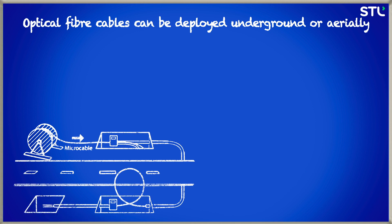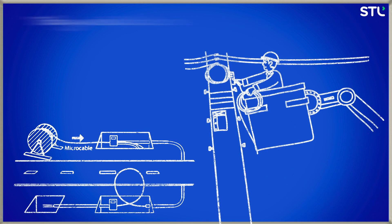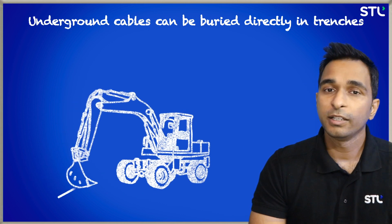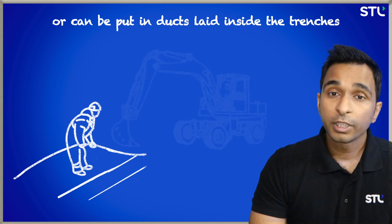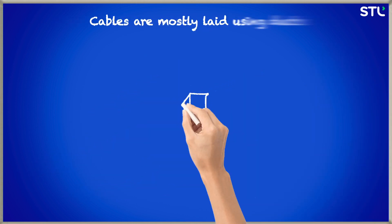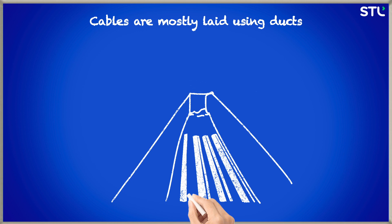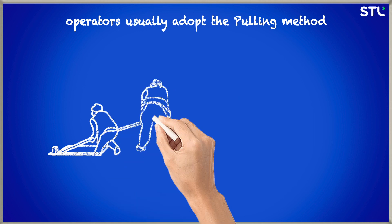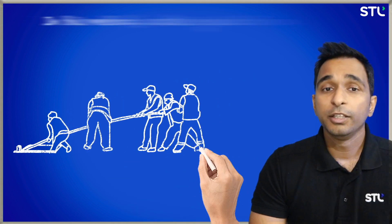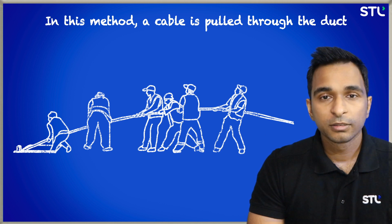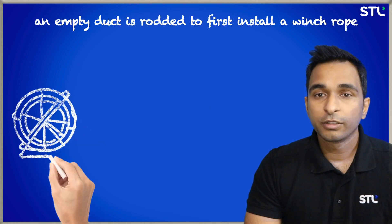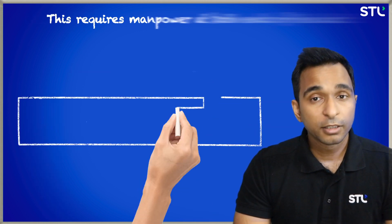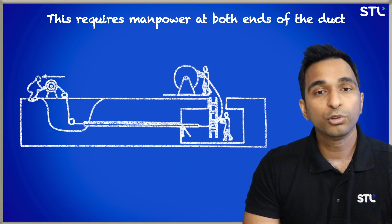Optical fiber cables can be deployed underground or aerially. Underground cables can be buried directly in trenches or can be put in ducts laid inside the trenches. Cables are mostly laid using ducts. When laying cables inside ducts, operators usually adopt the pulling method, where a cable is pulled through the duct. An empty duct is routed to first install a winch rope, which further pulls the cable through the duct. This requires manpower at both ends of the duct.